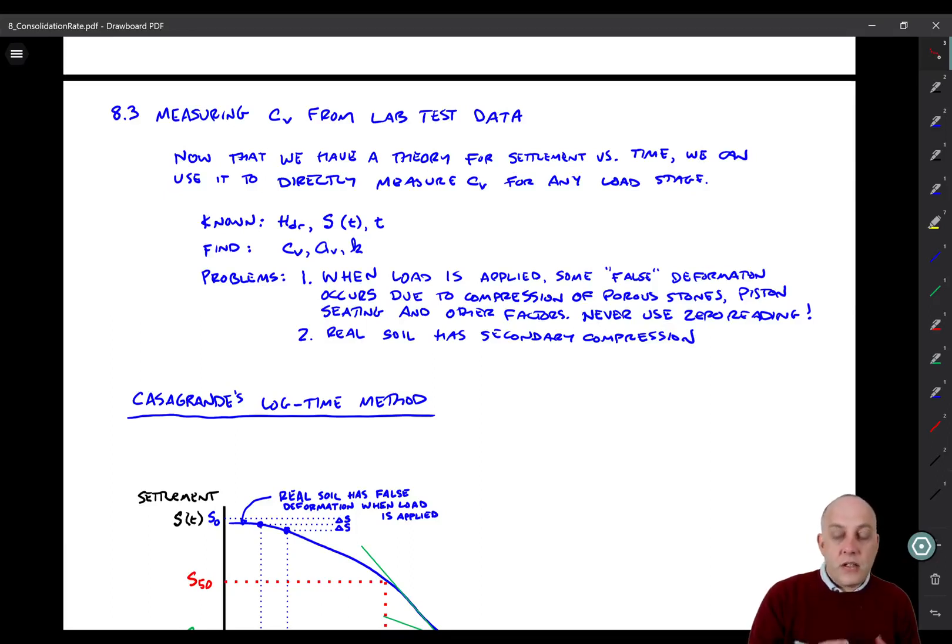There's also compression on porous stones and other components that are part of the system. Basically, all of that false deformation happens really quickly right when the load is applied. So what we do is we just always ignore the zero reading. I know you can read the dial gauge right before you apply the load, but that's a completely meaningless number. You should never use it, just throw it away because of this false deformation.